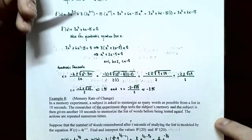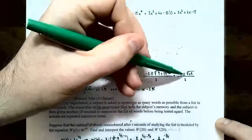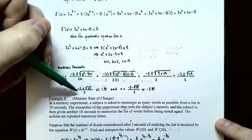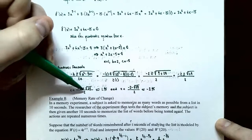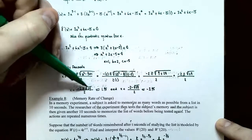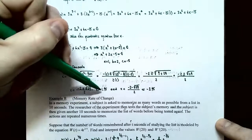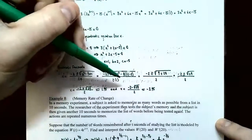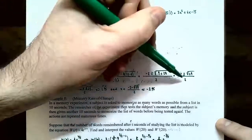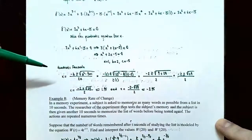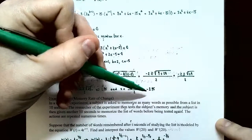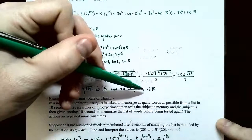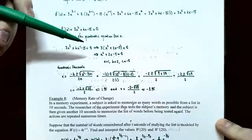There are two solutions. For x equals (negative 2 plus square root of 24) divided by 2, that's approximately 1.45. For x equals (negative 2 minus square root of 24) divided by 2, that's approximately negative 3.45. Make sure to put the numerator in parentheses in the calculator. At x approximately 1.45 and x approximately negative 3.45, the tangent line is horizontal because the slope is 0.